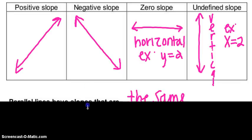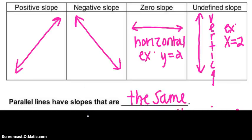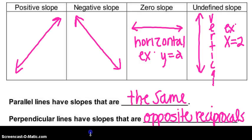Now let's look at parallel and perpendicular lines. If I have parallel lines, they're going to have slopes that are the same — if my slopes match and are identical, then I have parallel lines. If I have perpendicular lines, then my slopes are opposite reciprocals. An opposite reciprocal means two things: first, I change the sign of the slope; and second, my numerator and denominator switch.